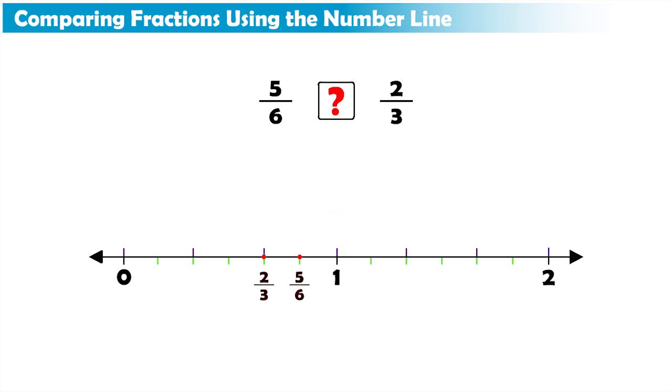Notice that both fractions are located at different points, so they are not equal. And the length, which is represented by the fraction 5 sixths, is more than that represented by the fraction two-thirds.